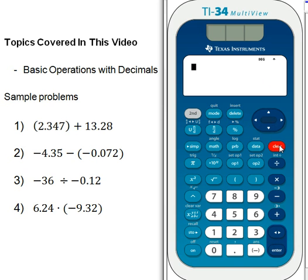Once again, we can just hit our clear button to get rid of that problem. The next one is negative 36 divided by negative 0.12.